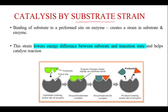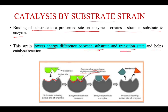Next is catalysis by substrate strain. Binding of the substrate to a preformed site on the enzyme creates a strain in the substrate and the enzyme. In the substrate strain theory of enzyme-substrate binding, the active site of the enzyme is floppy, and to fit into this active site the substrate undergoes a strain — it changes its shape slightly and bends. This strain lowers the energy difference between the substrate and the transition state and helps in catalyzing the reaction.